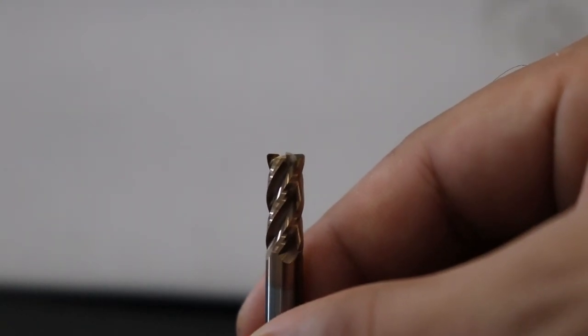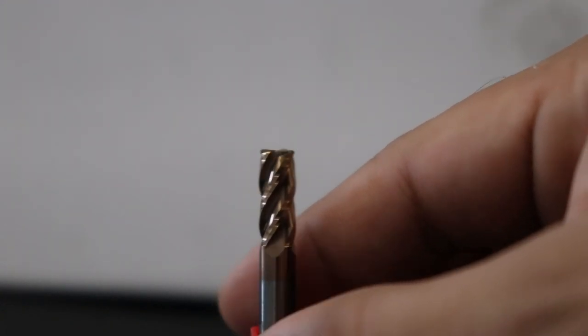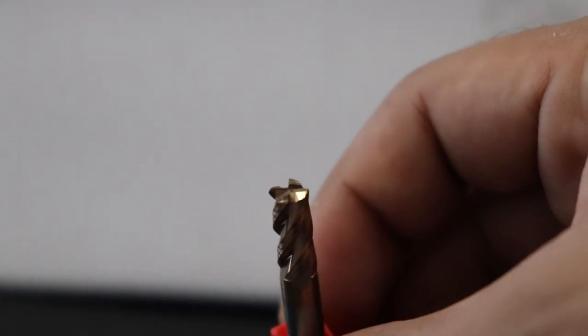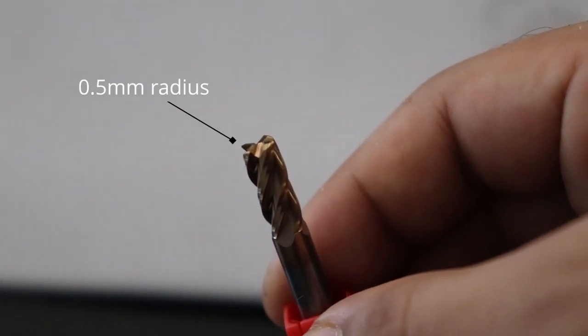To counter this problem, corner radius endmills are a thing. This is a square endmill, but the square edges have a small radius ground in, which greatly reduces that one weak spot. These endmills can often last longer than square endmills because of this, and are recommended wherever you can get away with radiused edges in a cut.